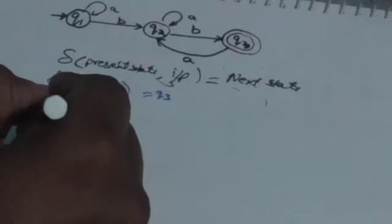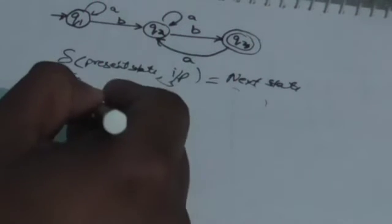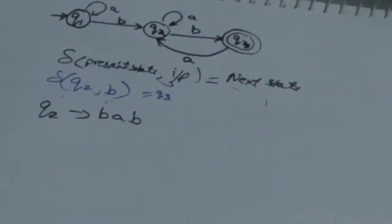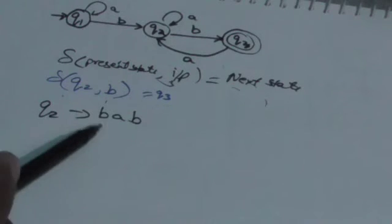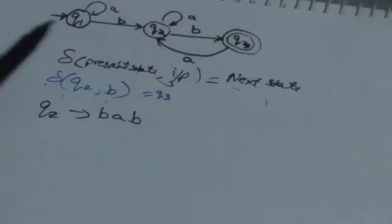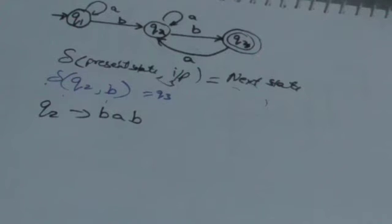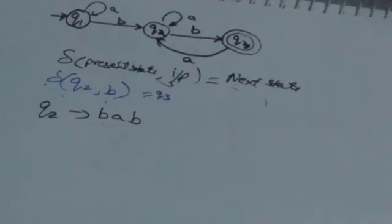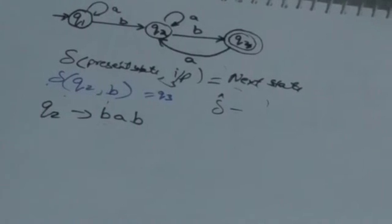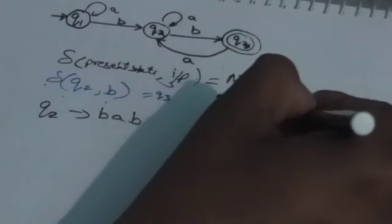Now we want the transition of the machine for a string of input symbols. Suppose the machine's present state is Q2 and it has to read the string BAB. We have to find where the machine would be after reading this string. The transition function can only tell the transition for a single input symbol, so we need a function whose second parameter is a string. For this, we have an extended transition function, and we denote it by delta-cap. It takes two inputs: one is the present state, and the second is the string.